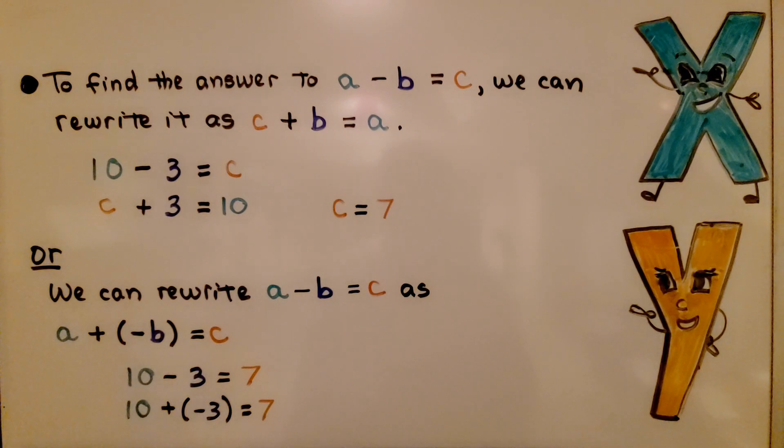Or we can write a minus b equals c as a plus negative b equals c. We have 10 minus 3 equals 7 or 10 plus a negative 3 equals 7. We can add the opposite.